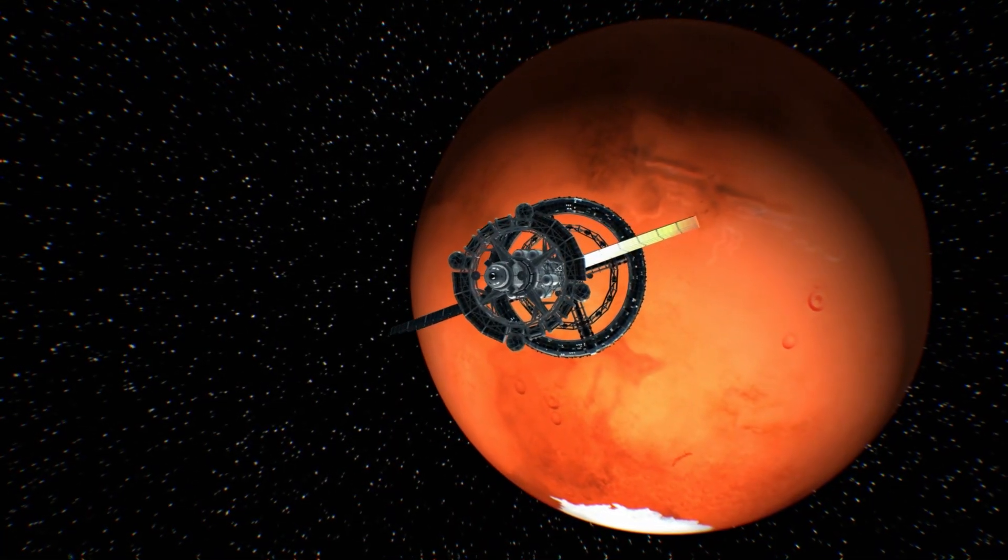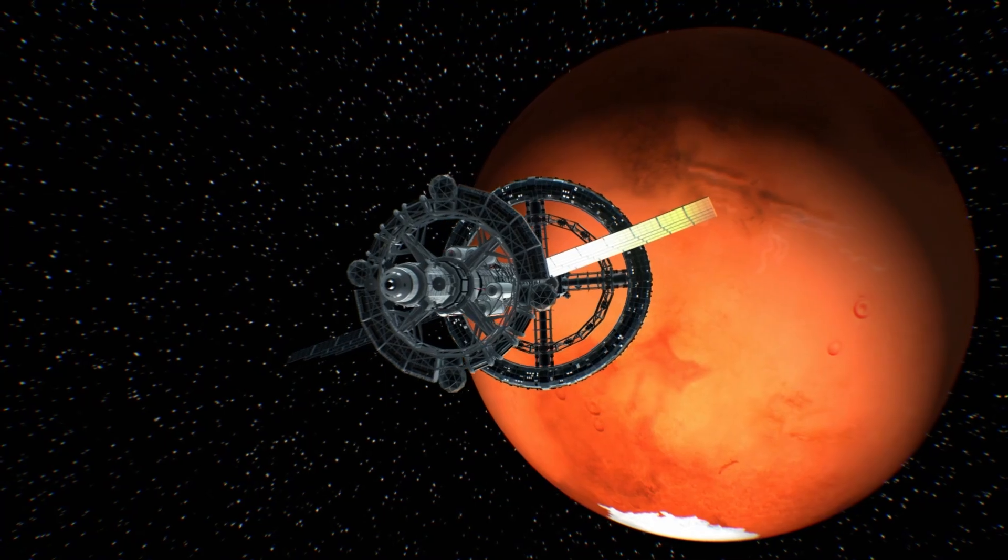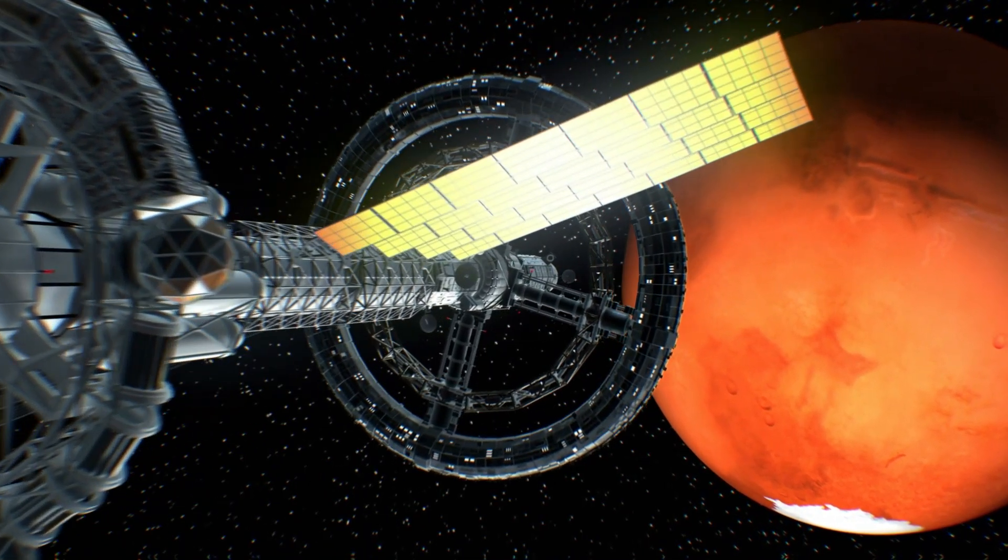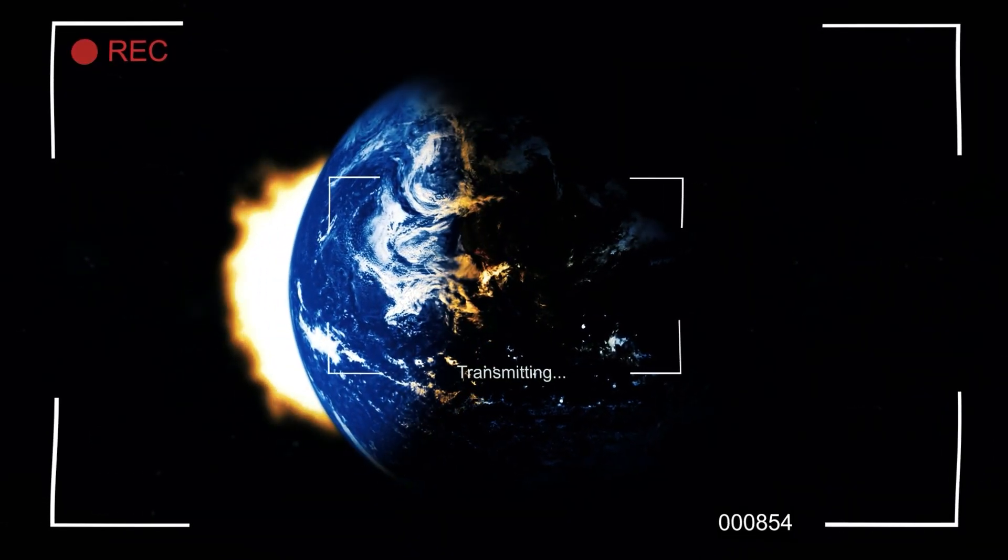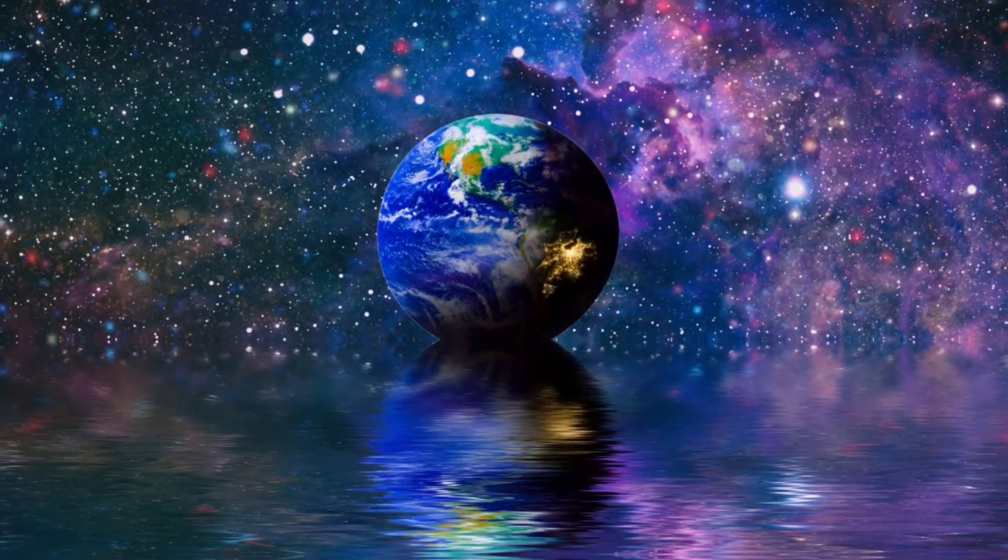Robotic exploration may one day focus on sending interstellar probes using advanced propulsion concepts like Breakthrough Starshot, though such missions remain hypothetical. Would you like a visual diagram of the Kepler-725 system, or a comparison between Kepler-725c and Earth?